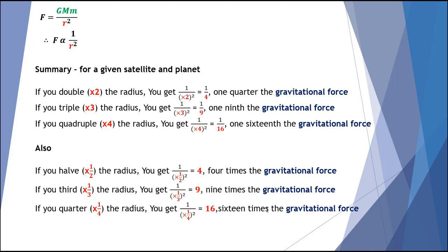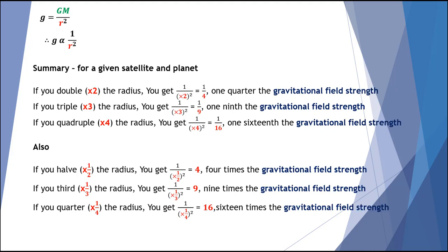Finally, it's worth noting that we could have calculated the gravitational field strength rather than the force between the two objects, and it works on the same principle. When you double the radius, you get one quarter of the gravitational field strength; triple the radius gives one ninth; quadruple gives one sixteenth — and the same applies when moving closer together. This proportionality rule applies to both the gravitational force between two objects and also the gravitational field strength.